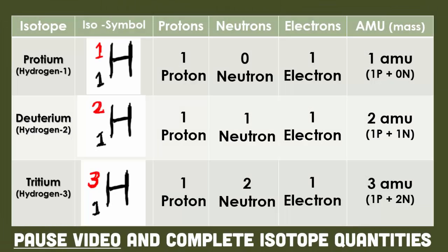For hydrogen-1: the isotope is hydrogen with a one in the top left corner, one proton, zero neutrons, one electron, and when you figure out the atomic mass — which is protons plus neutrons — you get one. Notice that deuterium, which is hydrogen-2, ends up with a two because it has one more neutron, and then tritium, which is hydrogen-3, has two more neutrons than hydrogen-1 and ends up with a mass of three. Notice that the masses are written in red in the isotopic symbol, showing that they're isotopes because they have the same number of protons but differ in the number of neutrons.